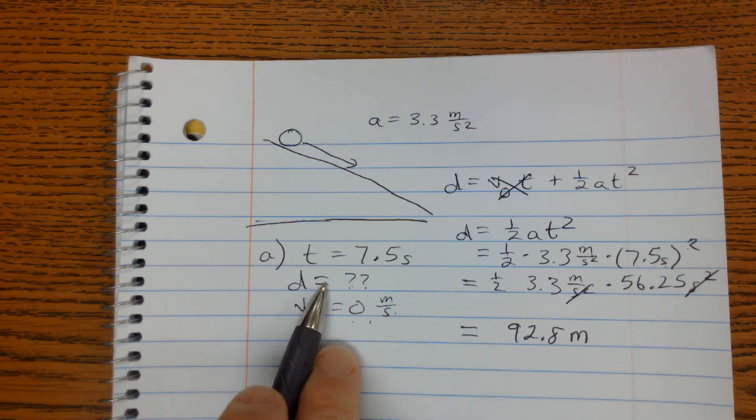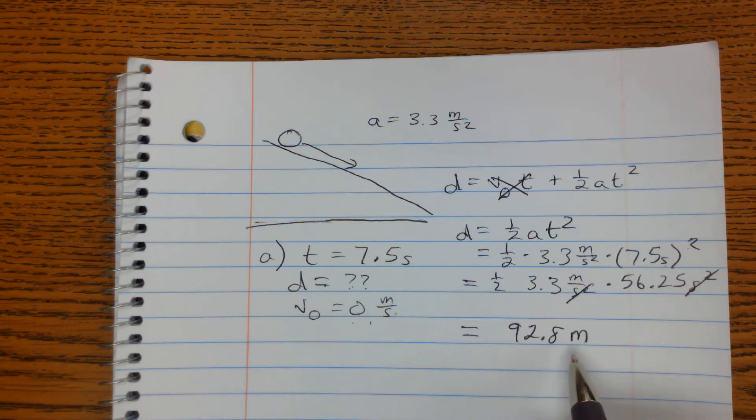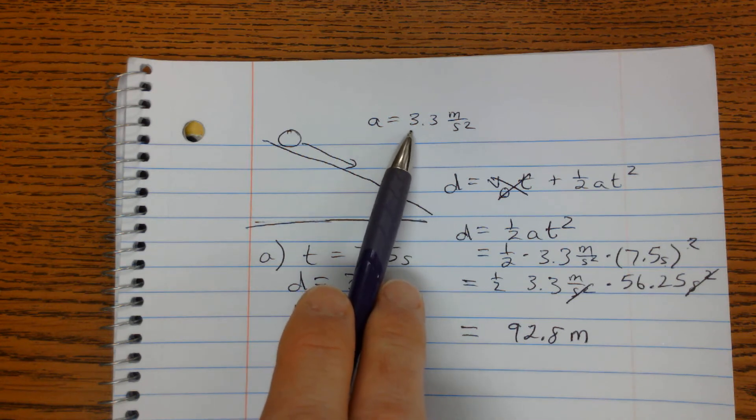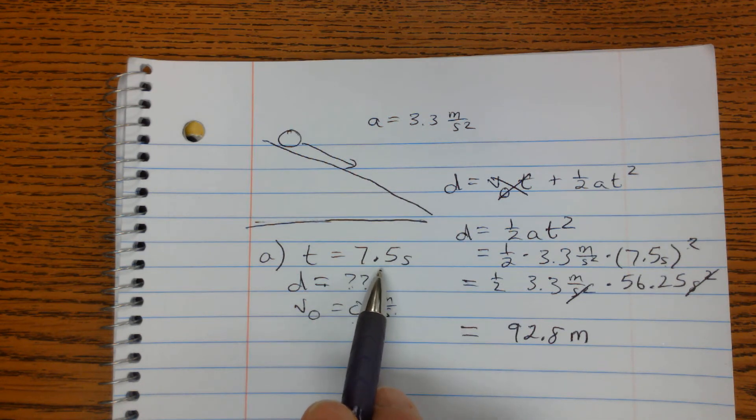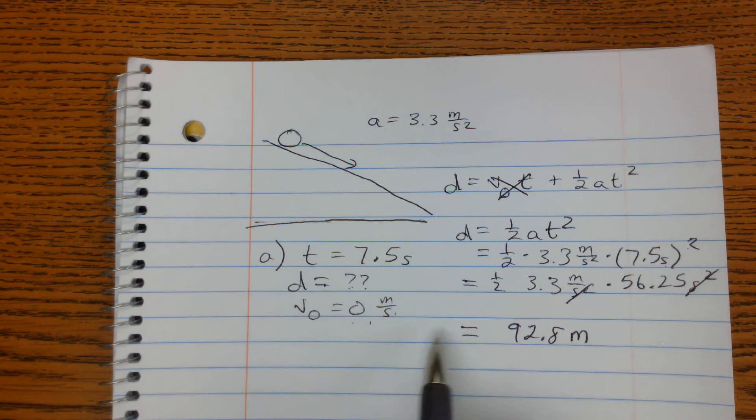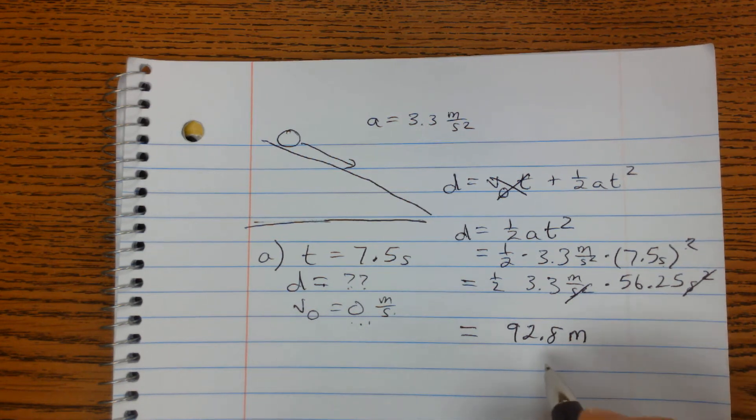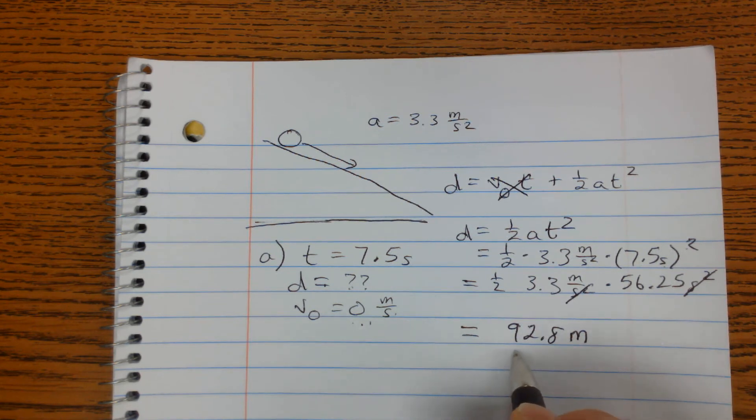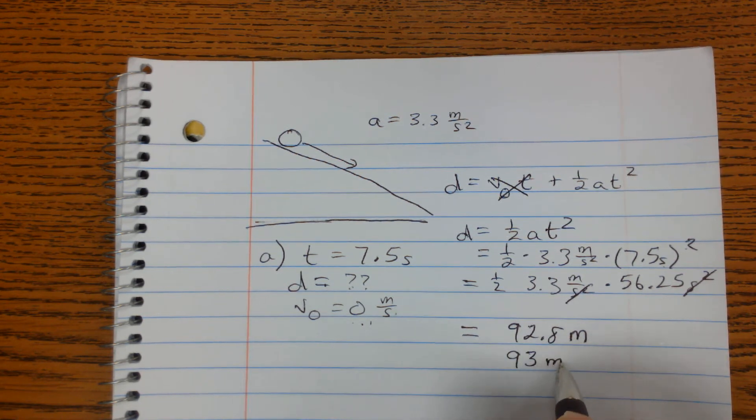And the question was to find the distance. So our units worked out, and that's correct. And if we're keeping significant digits, we were given 3.3 as an acceleration, we were given 7.5 as the time. We can assume the 0 from rest is infinite. So we can really keep two significant digits. So if you're doing significant digits on this, that's 93 meters.